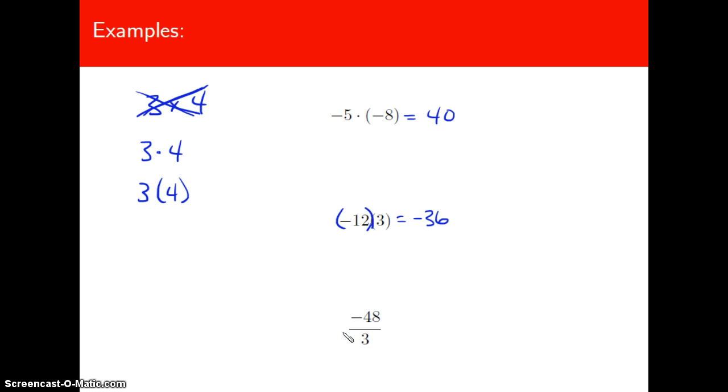And this is division. Similarly to the way that we're not going to use an old-fashioned symbol for multiplication now. We're going to write division like a fraction. So -48 divided by 3. I know what 48 divided by 3 is, it's 16. And since the signs are different the result has to be negative.